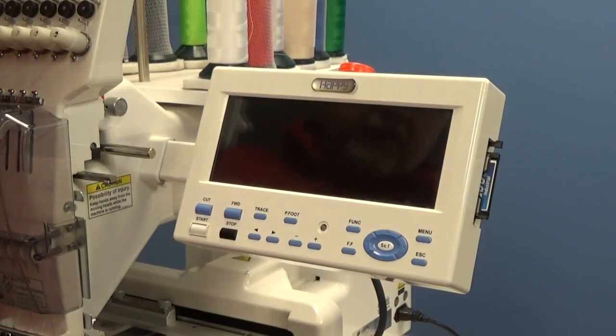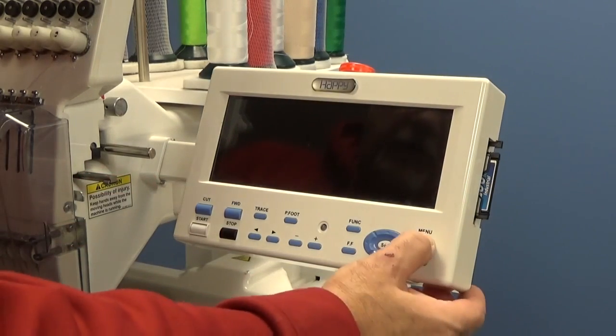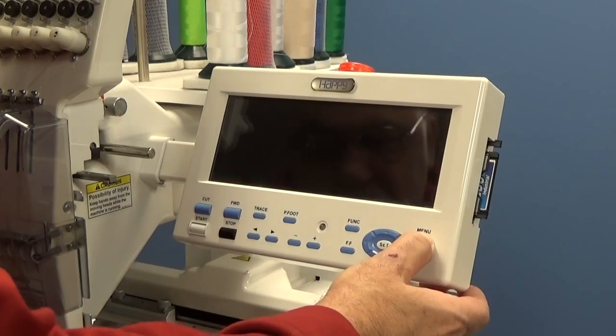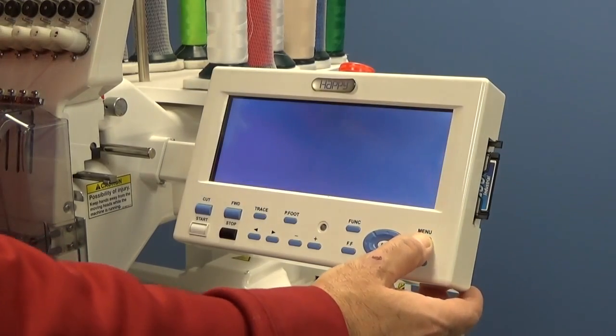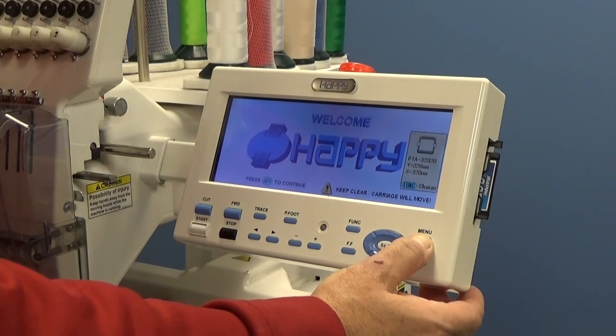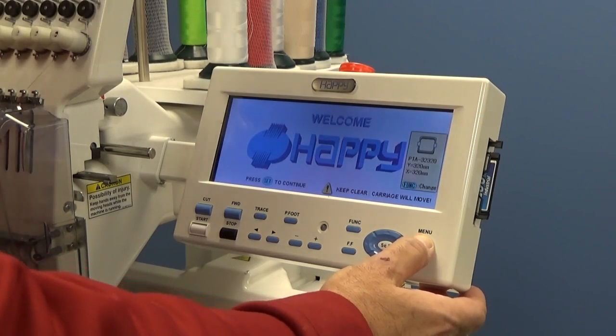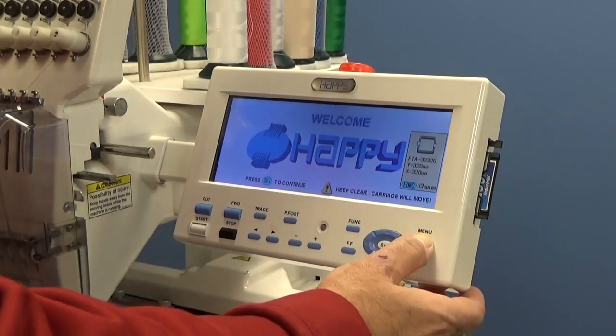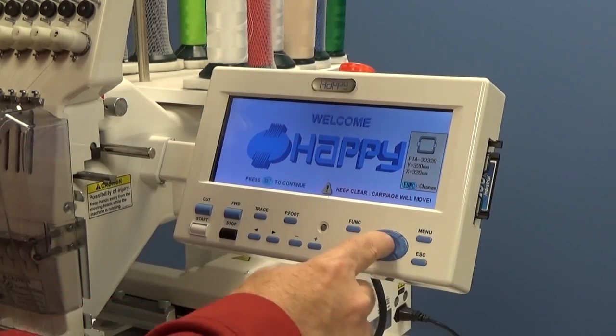You want to hold the menu button in and then power the machine on. Continue holding the menu button in until you see the Happy Move Frame on the screen. Now if you have the older firmware, you will not see this. It'll be just Happy. Let go, press set.